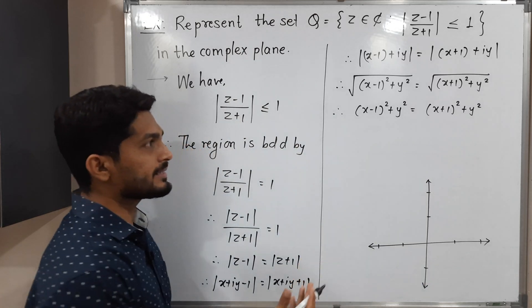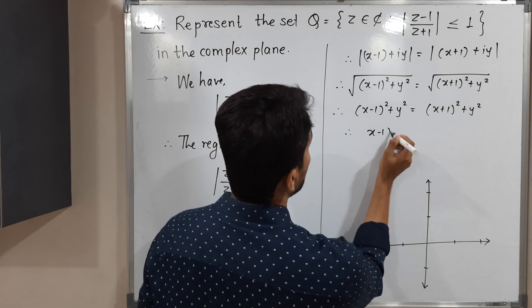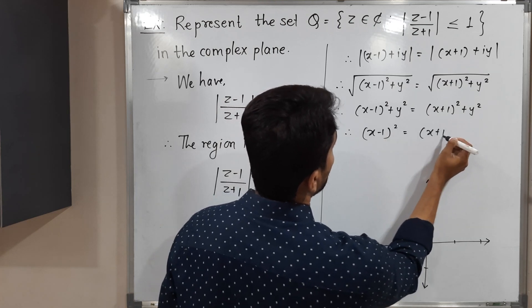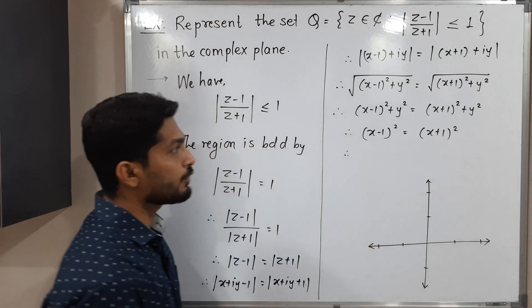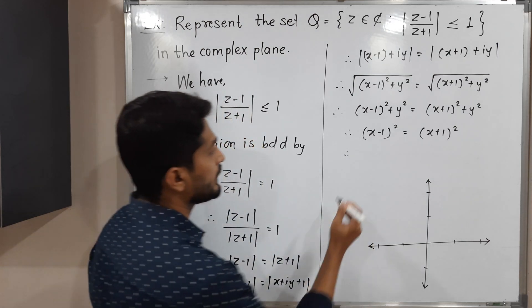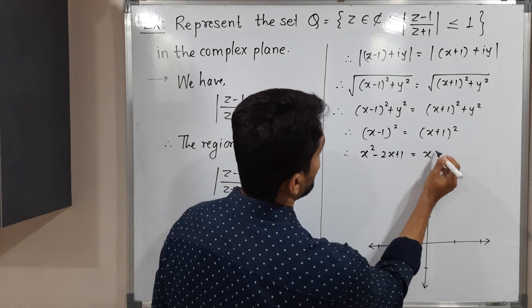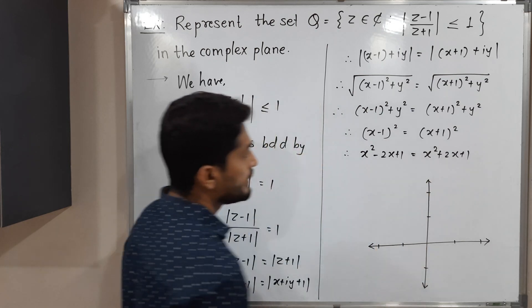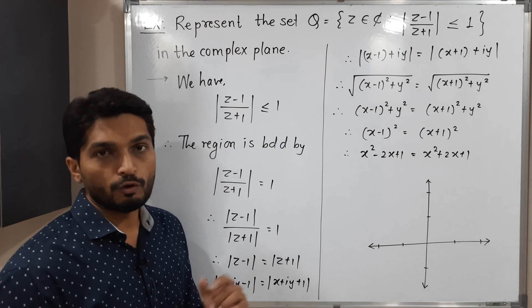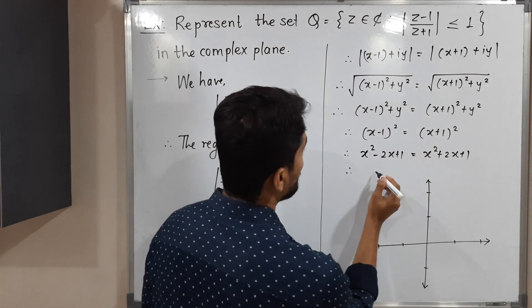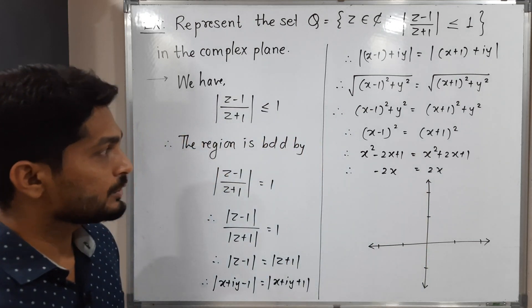We have Y² on both sides, so we cancel it. We are left with: (X minus 1)² equals (X plus 1)². Expanding using the (A minus B)² and (A plus B)² formulas: X² minus 2X plus 1 equals X² plus 2X plus 1. We can cancel X² and 1 from both sides.